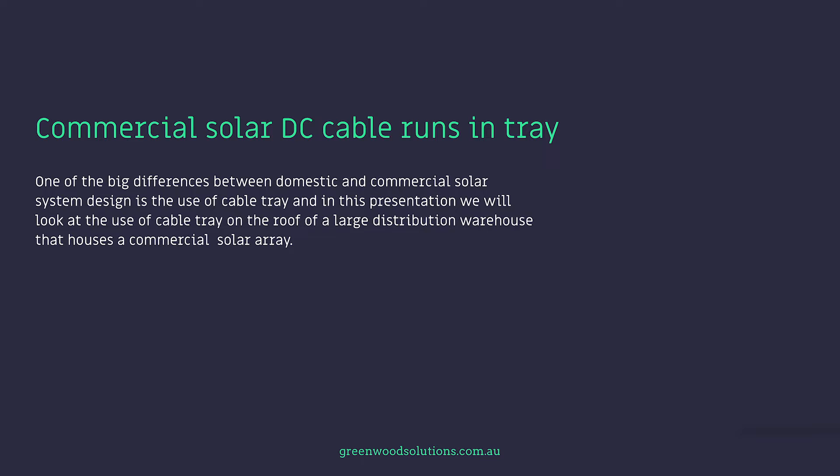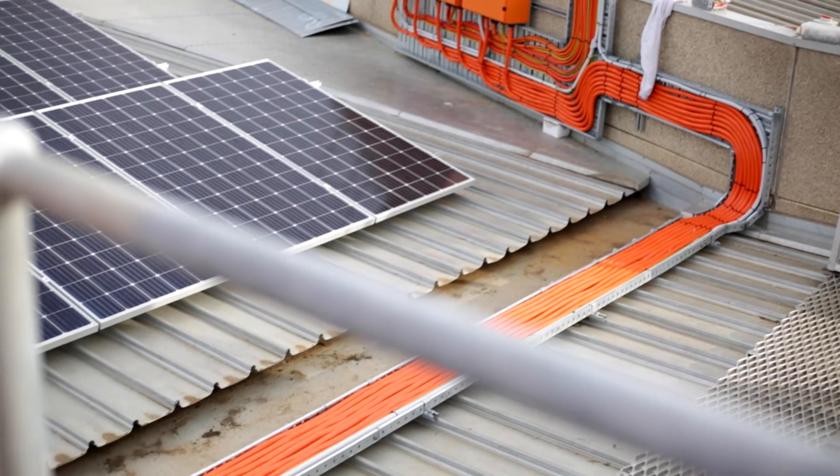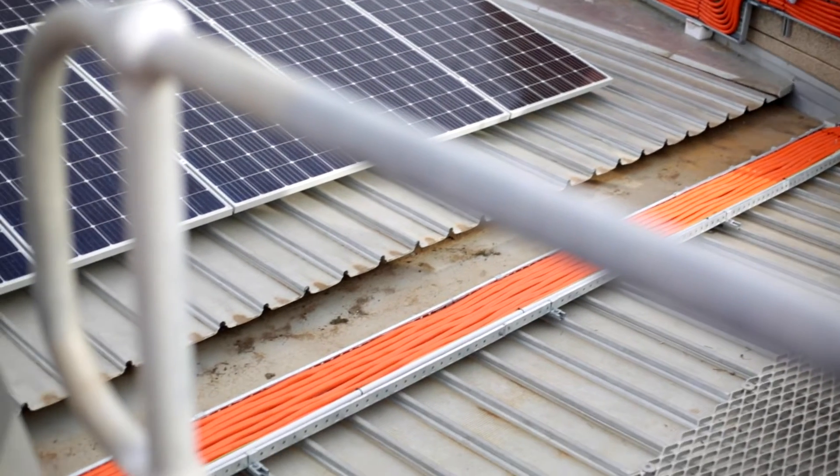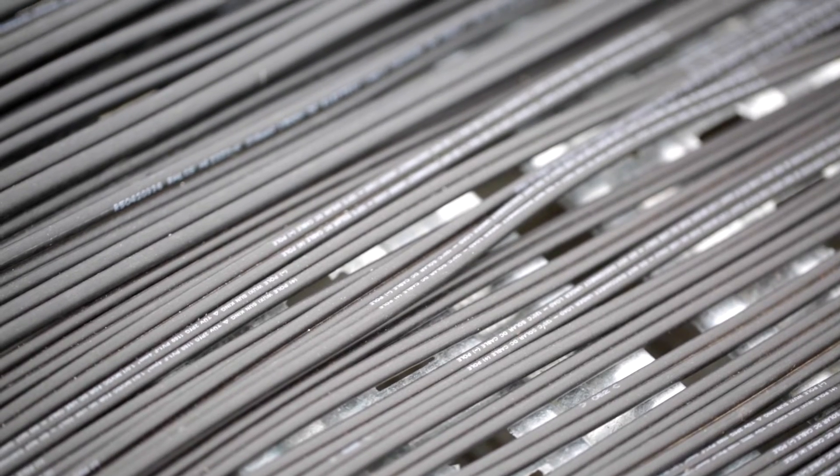One of the big differences between domestic and commercial solar system design is the use of cable tray. In this presentation, we will look at the use of cable tray on the roof of a large distribution warehouse that houses a commercial solar array. The tray in this example is used to accommodate the over 100 DC cable runs.